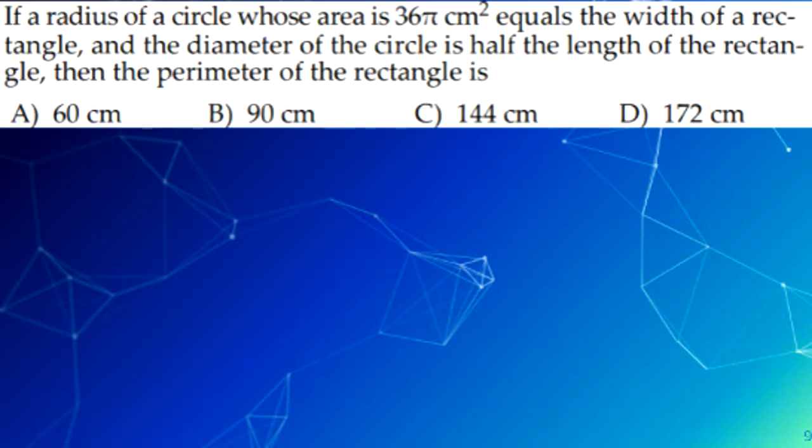So the length of the rectangle is 24 centimeters, because it said that the diameter was half the length of the rectangle. The perimeter of the rectangle is 2 times 6 plus 24, so 6 plus 24 is 30, and then 30 times 2 is 60.